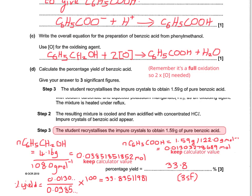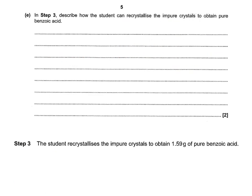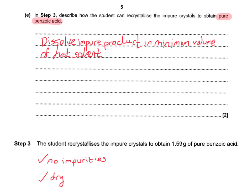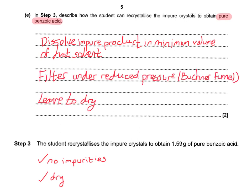Now let's move to the final part of this question. It says: in step three, describe how the student can recrystallise the impure crystals to obtain pure benzoic acid. It's really important to think about what 'pure' benzoic acid means — because technically water could be classed as an impurity, it has to be a dry sample. First, you've got to get rid of the impurities by dissolving the impure product in a minimum volume of hot solvent. Then you filter it under reduced pressure — you can add that you use a Büchner funnel if you want. And then you have to leave it to dry.